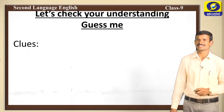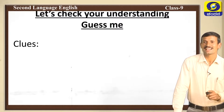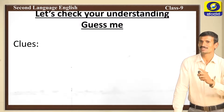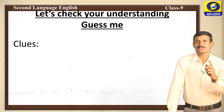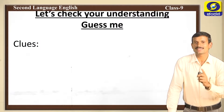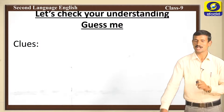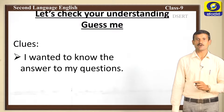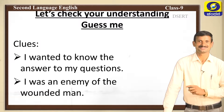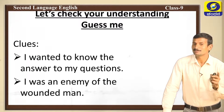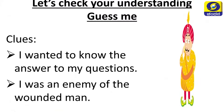Now let's check your understanding with a guessing game. I will give clues and you should identify the person or thing. First clue: 'I wanted to know the answer to my questions.' One more clue: 'I was an enemy of the wounded man.' Who is that person? Very good — the king!